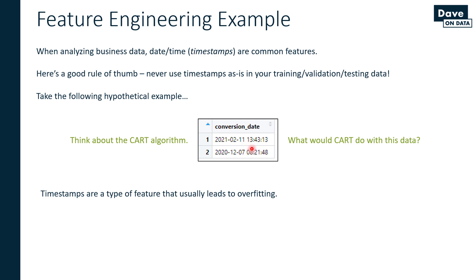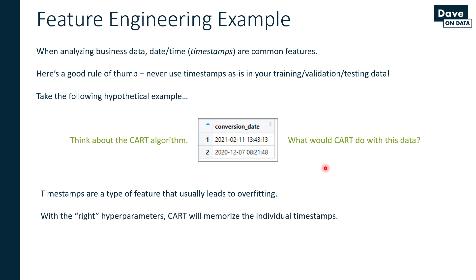Even more specifically, if you have the right hyperparameters, CART is going to memorize these individual timestamps. For example, if you have min_bucket set to one, you're probably going to get some pretty gnarly trees — they're going to be huge, and at the end the leaf nodes are going to be individual dates. If those features split the data perfectly, a CART algorithm will memorize the data as such.